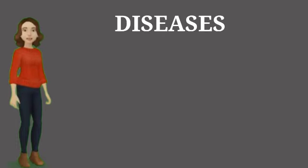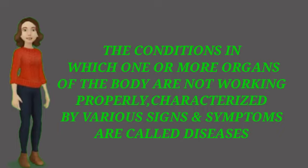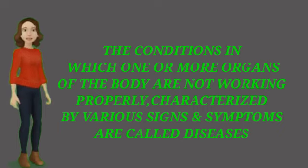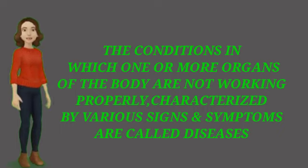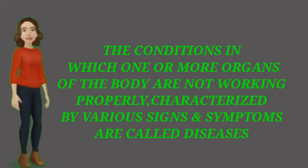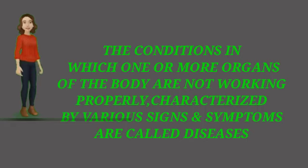In the last class we studied disease. Let us repeat the definition of disease. Disease is a condition in which one or more organs do not work properly, and various signs and symptoms are shown — for example, when you have a fever attack. Next, we will see how many types of disease there are.